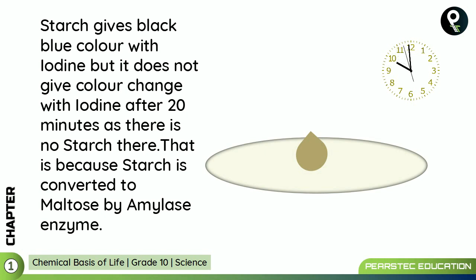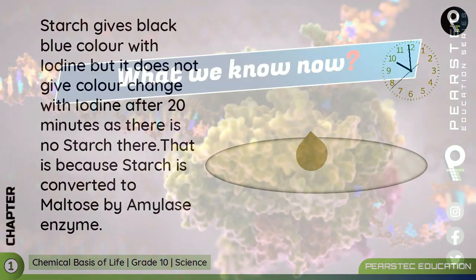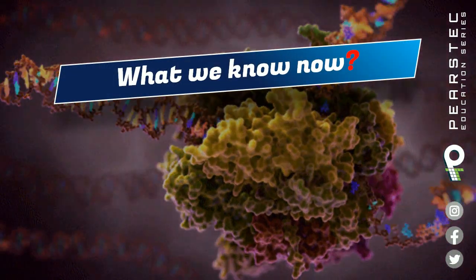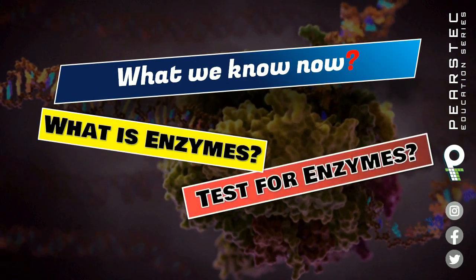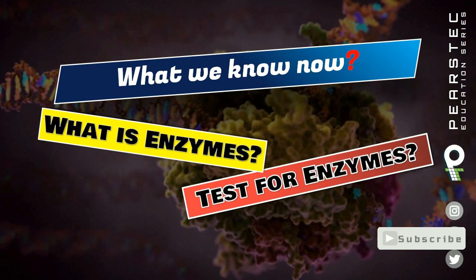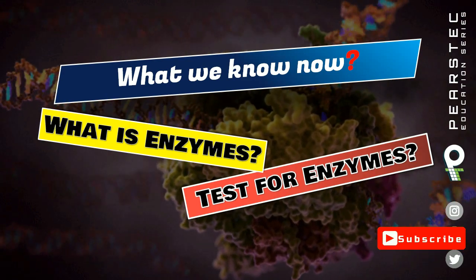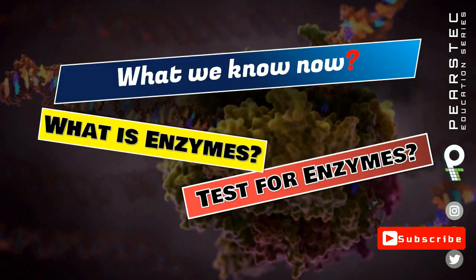The color did not change after some time because catalyzation had occurred. Starch is converted to maltose by amylase enzyme. So now we know what enzymes are, and we have done a test for enzymes as well. We'll meet you in another session — till then, bye bye, take care of yourself.